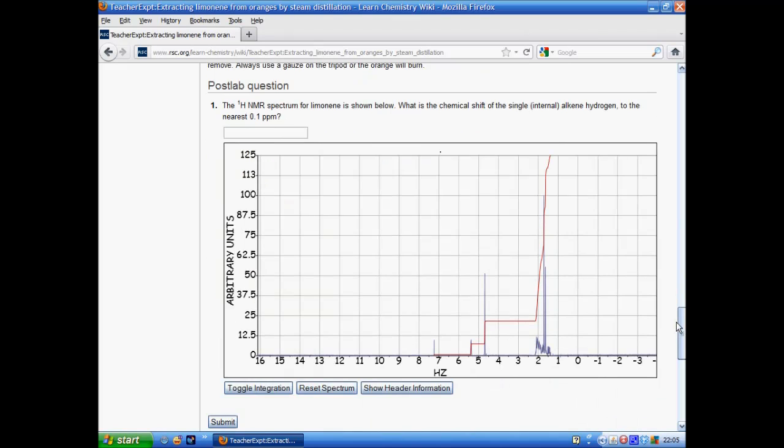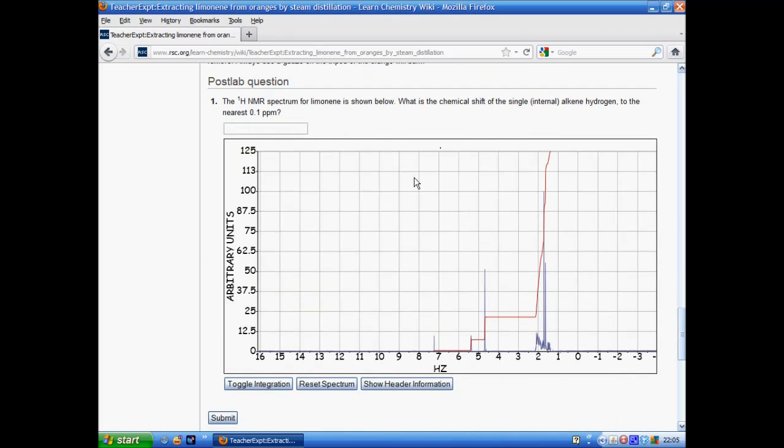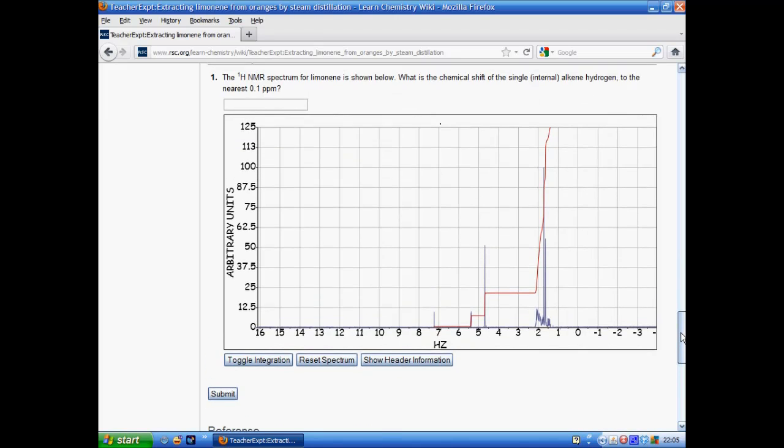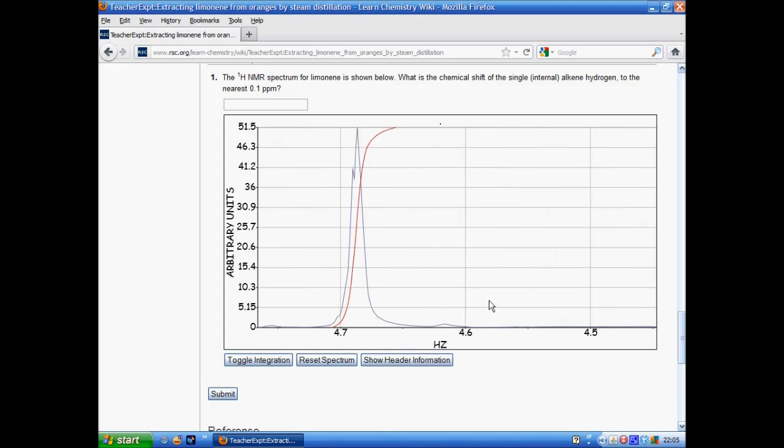As we scroll down we can see that one of the advanced features of the Wiki, this spectrum here isn't just a static picture, it's interactive. It's possible to drag your mouse across certain portions of it to zoom in, for example to see if the peak is split. This enables students to see in enough detail that they can answer detailed questions about the spectrum.